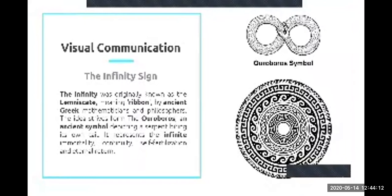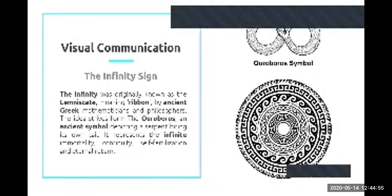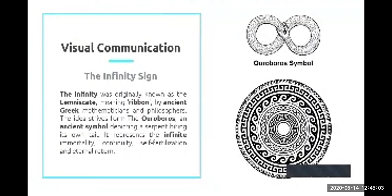The Greeks also used the infinity symbol. The infinity symbol basically originates from the Ouroboros tribe. This symbol represented infinite immortality and continuity. The Greeks took the same idea, modified it, and utilized concepts of immortality, continuity, self-fertilization, and eternal return.